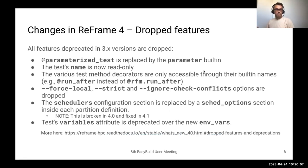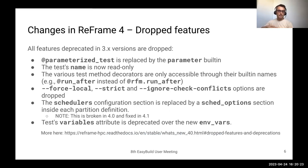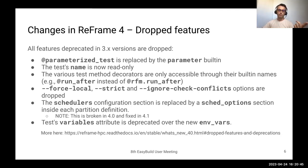Starting with the changes in Reframe 4.0: all deprecated features in 3.x have been dropped. So if you're getting deprecation warnings in 3.x and you want to move to Reframe 4.0, you will have to fix those deprecations — otherwise you will have errors. We introduced one big deprecation in 4.0, which is the `variables` attribute or configuration parameter for environments. This is now called `nvars` to more accurately match what it actually is. You might get lots of deprecations as soon as you move to Reframe 4, but especially for tests this is really a straightforward replacement, so it should be easy to fix.